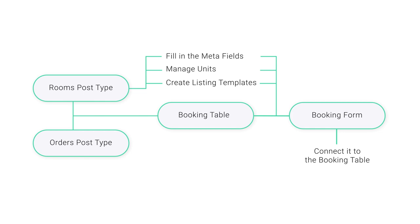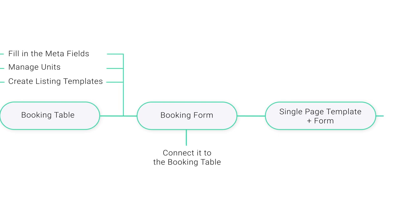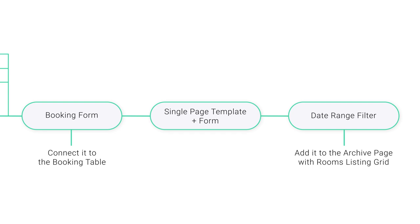The info users put in the booking form will go as the order details. Once done, we create a single post template for your item — a room in our case — and insert the booking form there, so users can book the room on the same page. Then we create a filter and put it on the archive page, which will display a listing grid and allow filtering out rooms already booked for particular dates. Now let's get started.